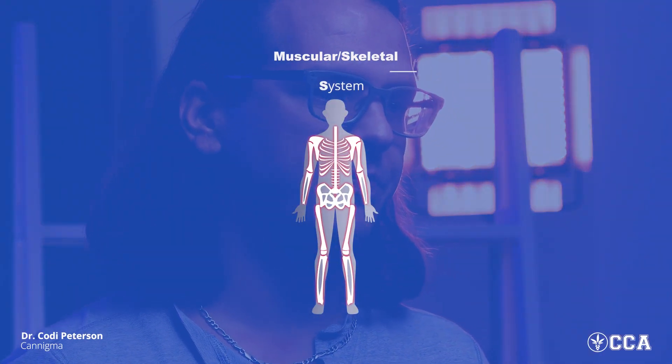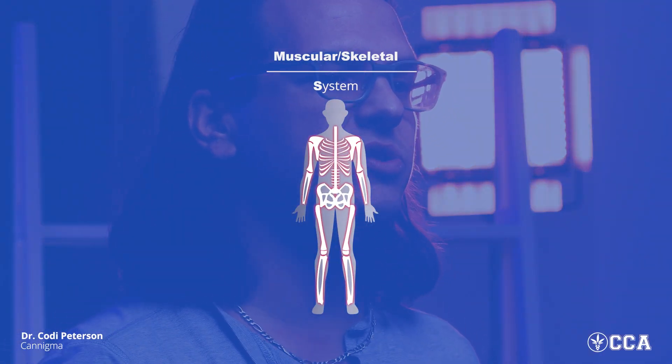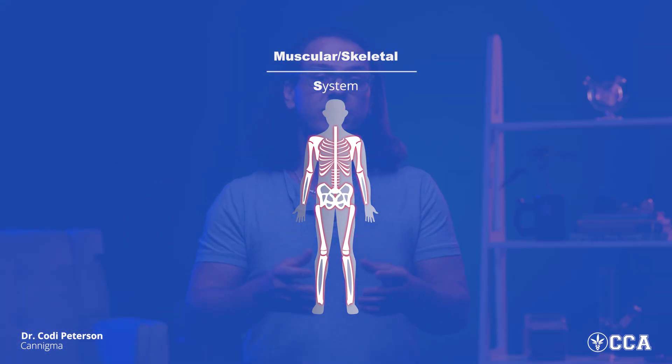Moving on to the musculoskeletal system, comprised of the muscles and bones, which provide the support, stability, and movement needed to live your life. The ECS helps regulate much of this system and is heavily involved in muscle function — helping muscles determine whether to use sugar or fat as energy. Because the endocannabinoid system serves such a vast role in muscles, it's not surprising that THC can in rare cases cause muscle spasms, which can be alarming but generally not harmful.